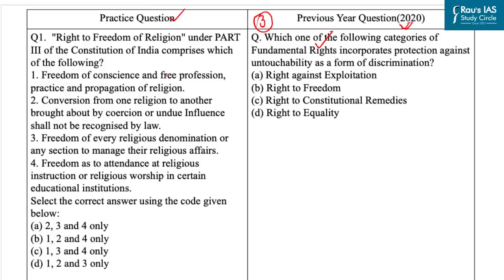As you all know, the Constitution of India guarantees the right to freedom of religion to not only individuals but also religious groups in India, and this is enshrined in Articles 25 to 28. This first statement refers to Article 25, that is, freedom of conscience and free profession, practice and propagation of religion.